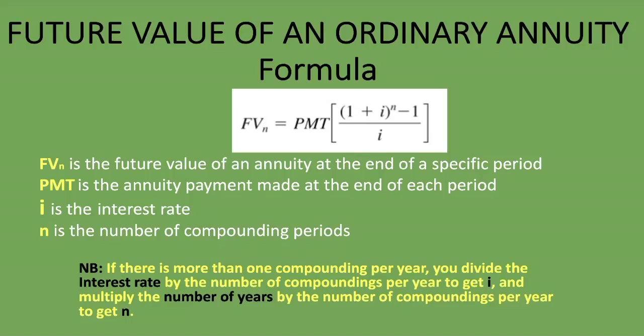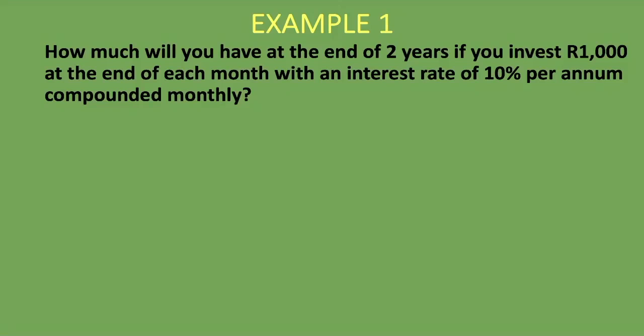Here's the first example. How much will you have at the end of two years if you invest R1,000 at the end of each month with an interest rate of 10% per annum compounded monthly? The first thing you always check is whether the payment period is the same as the interest compounding. The payment is monthly, and the interest rate is also compounded monthly — so they coincide. We do not have to convert the interest rate to match the payment period.